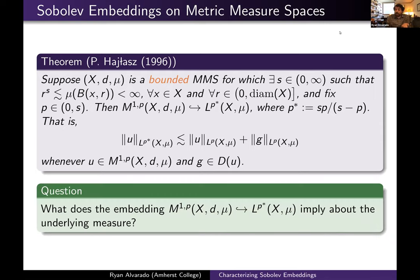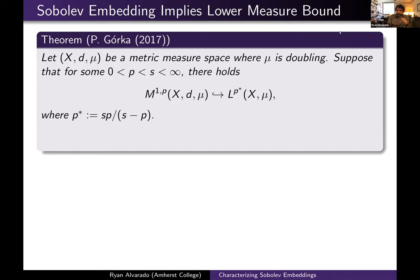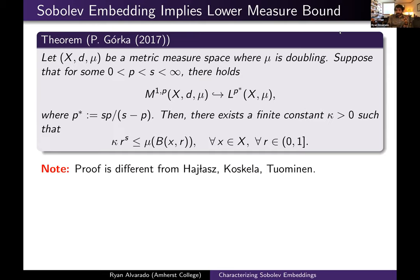We can ask the analogous converse question: if we assume a Sobolev embedding, does that imply anything about the underlying measure? The answer is yes. In 2017, Górka proved: if you have a metric measure space with a doubling measure, and for p < S you assume M^{1,p} on all of X embeds into L^{p*}, then the measure satisfies the lower measure bound. The doubling was an important part of his proof, using a different circle of ideas than the Hajłasz-Koskola-Tuominen argument.